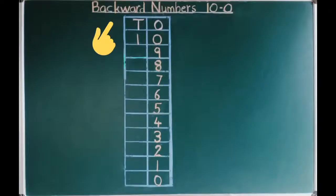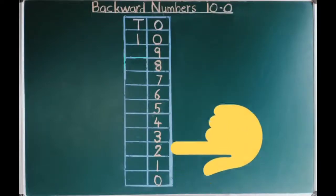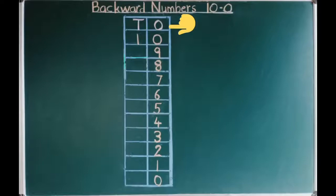Backward numbers 10 to 0. T means tens. O means ones. Now, in backward numbers, first we have to write number 10. 1 we have to write below T. And 0 we have to write below O. And single digit number we have to write below O. Let us start.